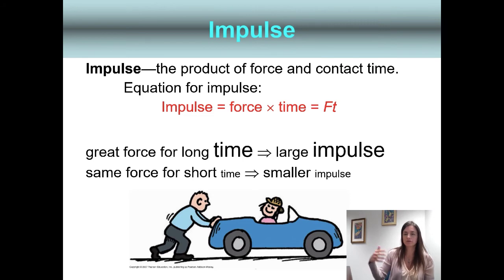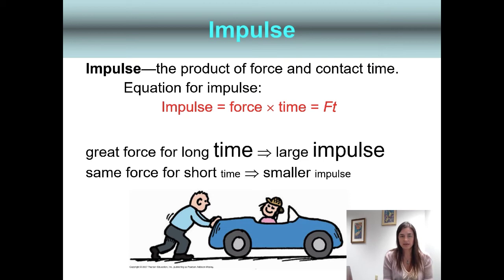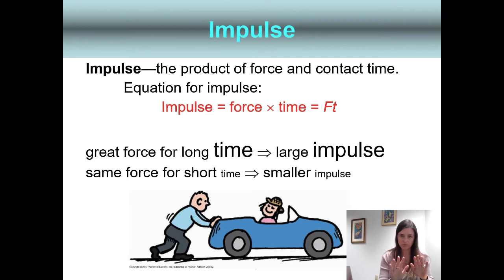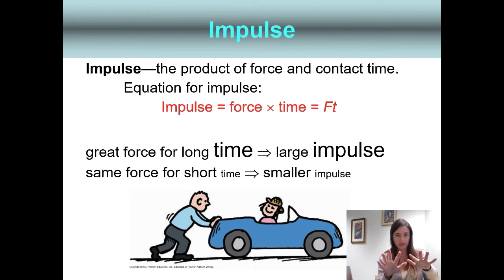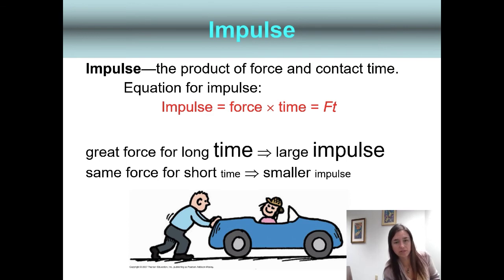This is where things get really cool. Impulse is the product of force and contact time. If you're applying a force for a longer time, there's more impulse — not necessarily more force, but more impulse. We all know that if you tap your shopping cart it might go a little distance, but if you push on it for a while and then let go, it'll have more momentum. Greater force for a long time equals a large impulse; the same force for a short time is a small impulse.